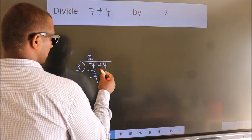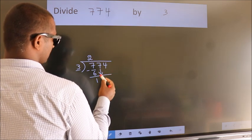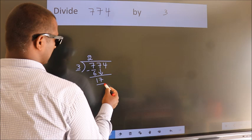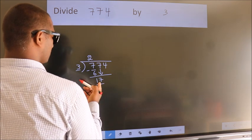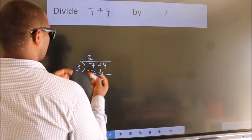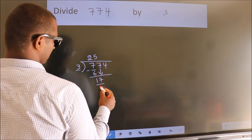After this, bring down the beside number. So, 7 down. So, 17. A number close to 17 in 3 table is 3 fives, 15.